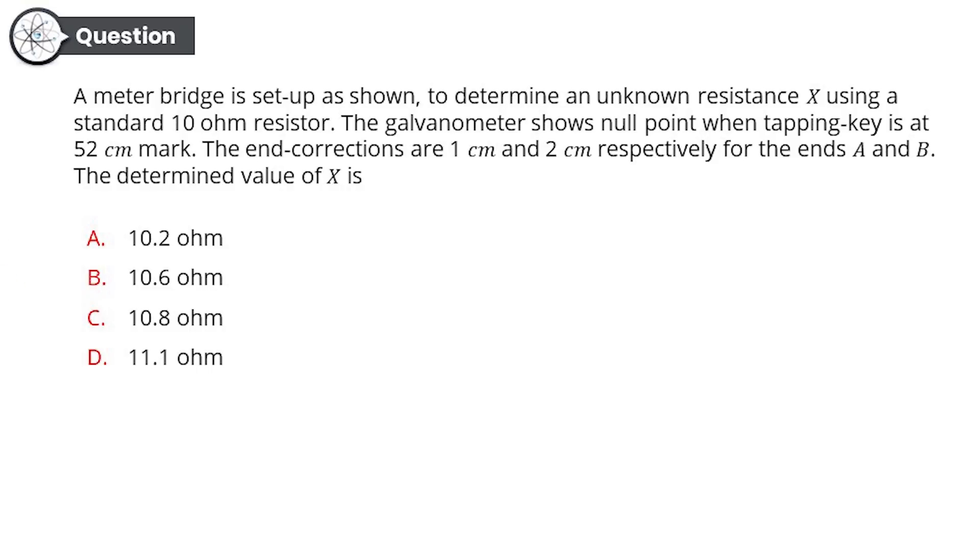Question number one: A meter bridge is set up as shown to determine an unknown resistance X using a standard 10 ohm resistor. The galvanometer shows null point when tapping key is at 52 centimeter mark. The end corrections are 1 centimeter and 2 centimeters respectively for the ends A and B. The determined value of X is how much?